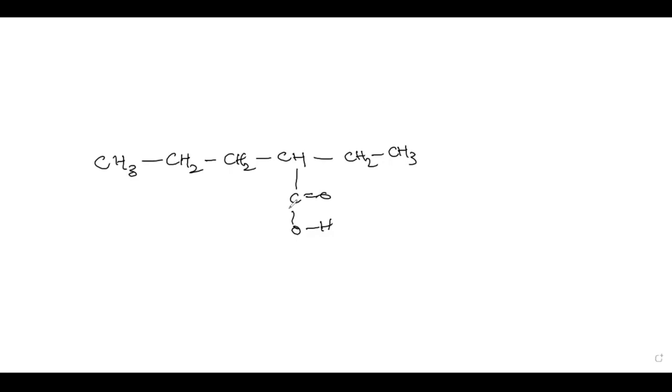So this is the rule. Now you will see that this carbon is number one. The longest carbon chain will become one, two, three, four, five. It will be 2-ethyl pentanoic acid.